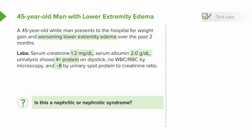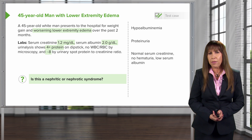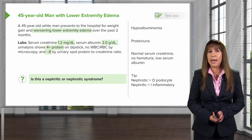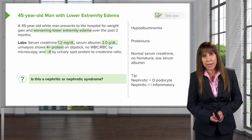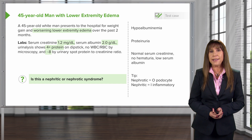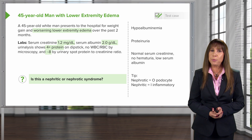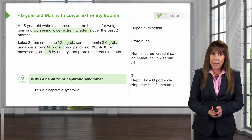Our patient had worsening lower extremity edema because of that low albumin, or hypoalbuminemia. Why does he have a low albumin? Because he's spilling a lot of protein in his urine — eight grams of protein. That's a large quantity. He has a normal serum creatinine and no red blood cells or white blood cells in his urine. Taken together, this is more indicative of nephrotic syndrome. To help us remember: nephrotic contains the letter O, and podocyte — the superstar of nephrotic syndrome — also has the letter O. Nephritic has an I, and nephritic diseases are more inflammatory. That can help us distinguish between the two. The answer is nephrotic syndrome.